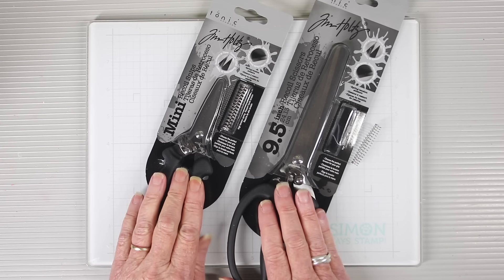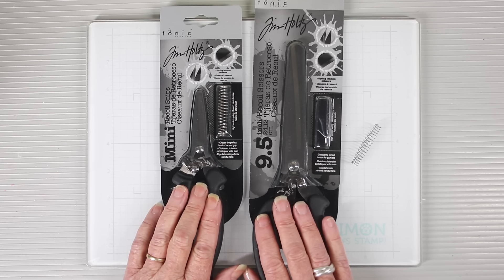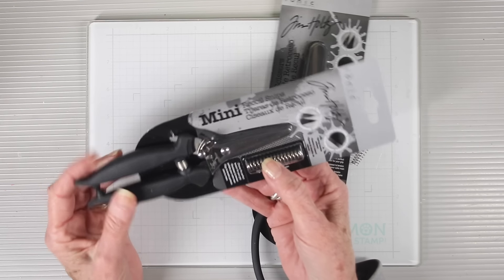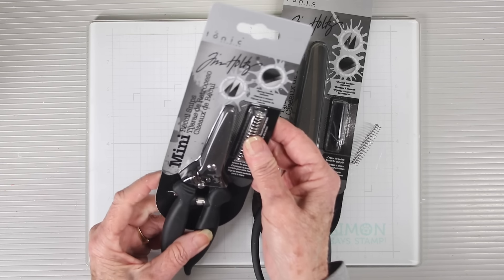When you get your scissors, you'll have some noticeable differences between Tim Holtz and Tonic Scissors in the past. This first set is the Mini Snips. They have a 2-inch titanium blade for your fussy cutting and snipping small details.